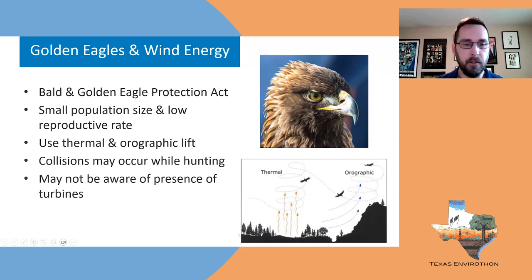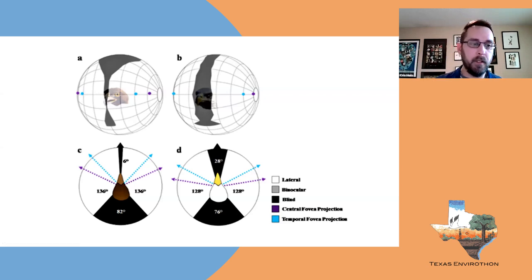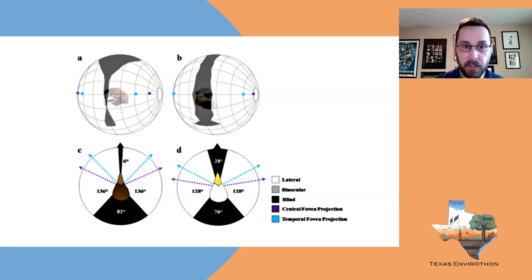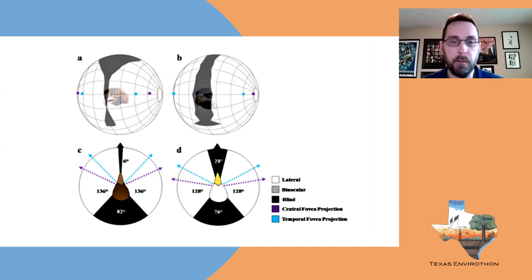Raptors have a blind spot on top of their head, so when a raptor is soaring and looking down at the ground searching for prey, it can't see what's in front of it. If a wind energy facility is in its path, it may not even be aware of it. This differs from bats, which actively fly in and around turbines. For raptors, collisions may mostly just be bad luck — they're flying through airspace occupied by wind turbines without even knowing it.